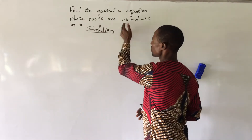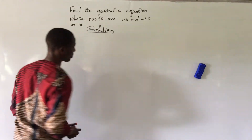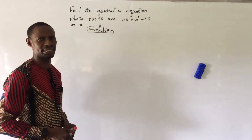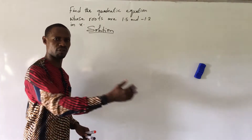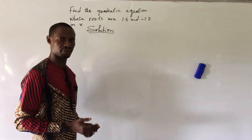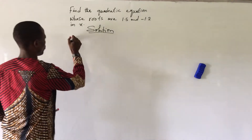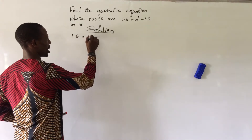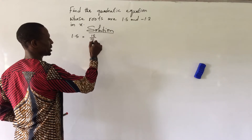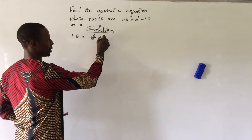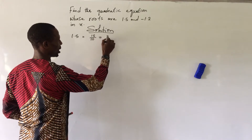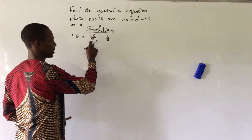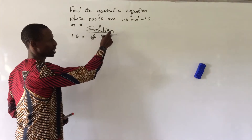The answers are given in decimal form, so we convert them to improper fractions for easy manipulation. So 1.5 is seen as 15 over 10, and if we simplify this it gives us 3 over 2, because 5 can go into 15 and 5 can go into 10. So 1.5 is equivalent to 3 over 2.